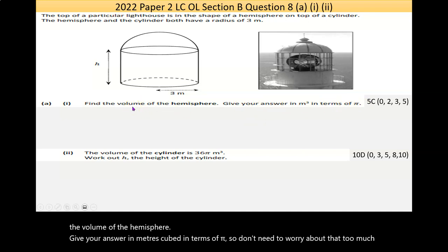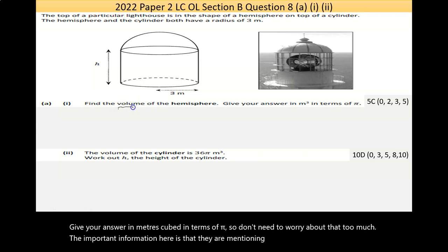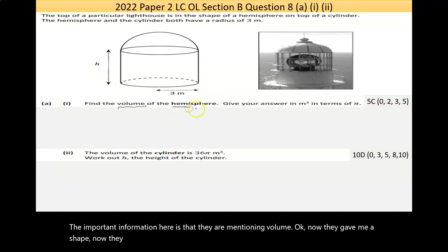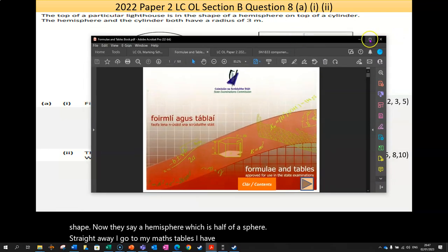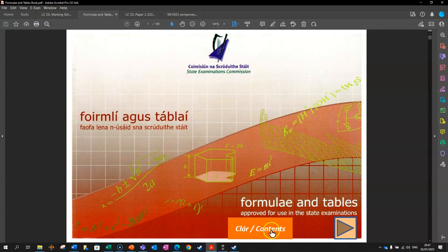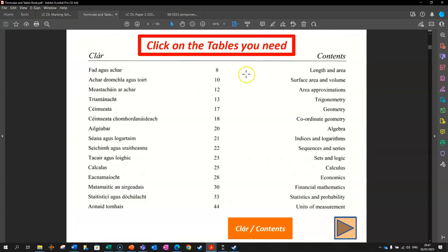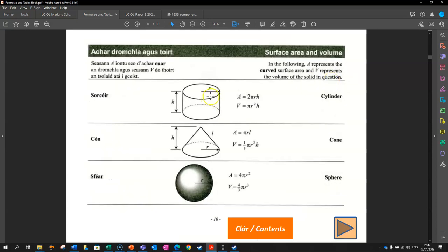They give me a shape. They say a hemisphere, which is half of a sphere. Now straight away, I'll go to my maths tables. I have a digital version of these. If you want, I can always send it on to you as well, no problem. If I go to the contents, I'm looking for volume. Click on that. It'll bring me to, I see a cylinder, I see a cone, I see a sphere. So this is what I'm looking for. And once I have that, I want to write on the page.